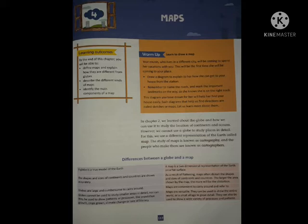The shape and sizes shown on a map are not accurately represented. Because of flattening, maps often distort the shape and size of continents and countries. The larger the area shown on the map, the more distorted it becomes. Globes are large and very cumbersome to carry around, while maps are very convenient to carry and take from place to place.